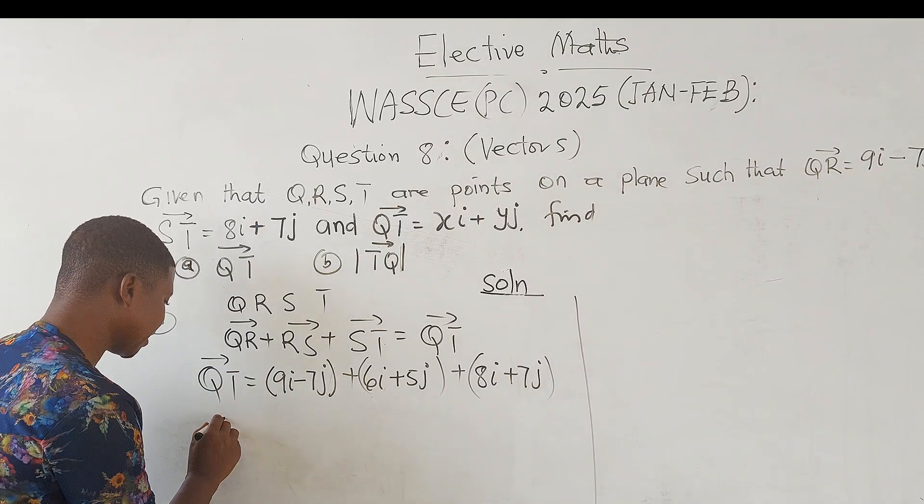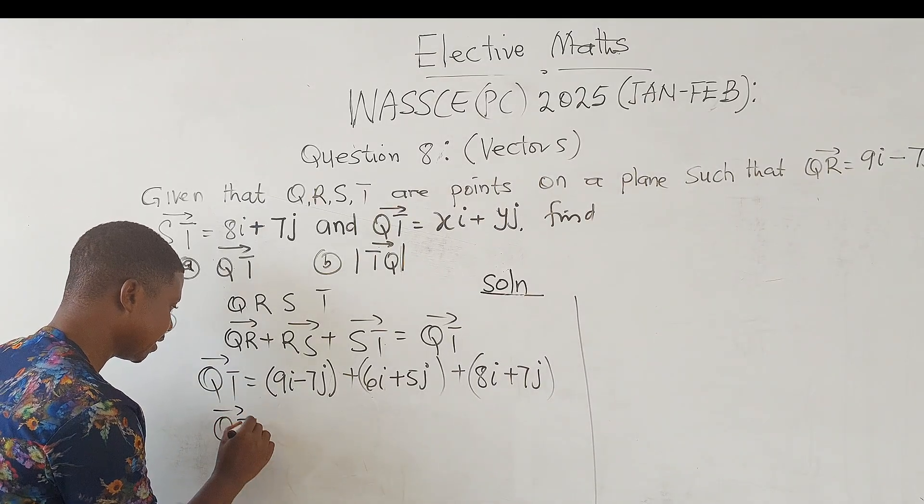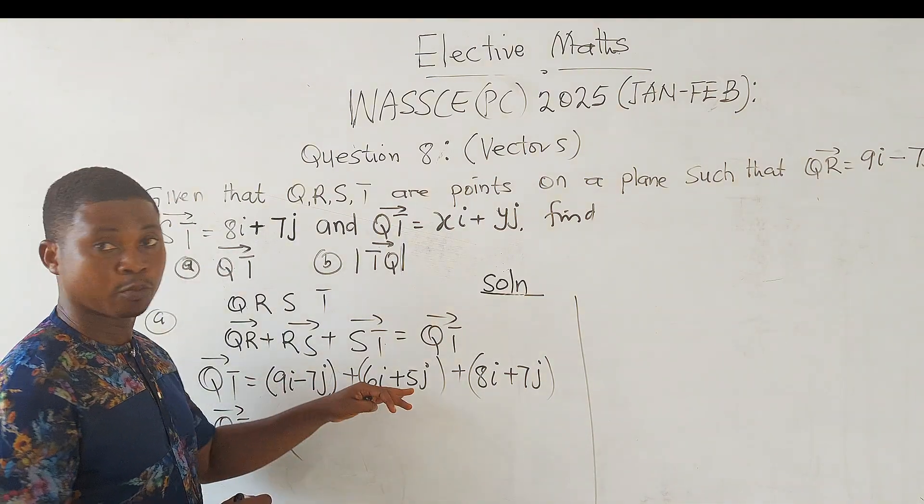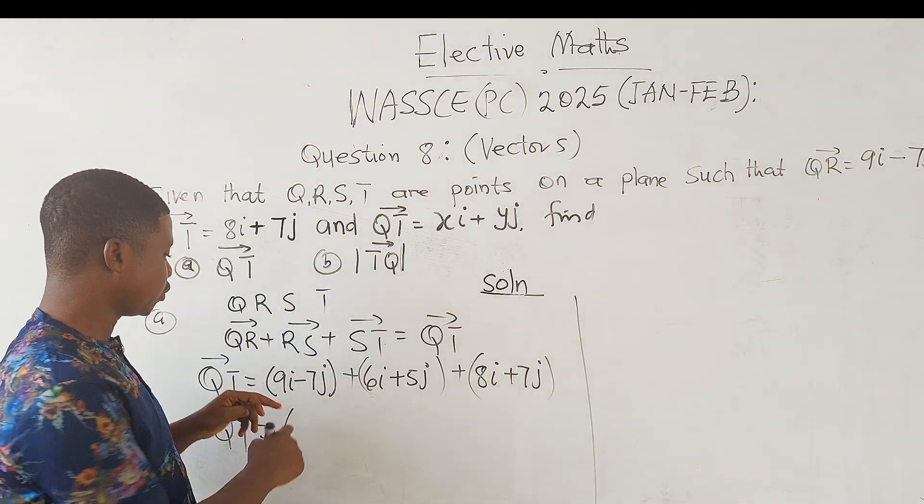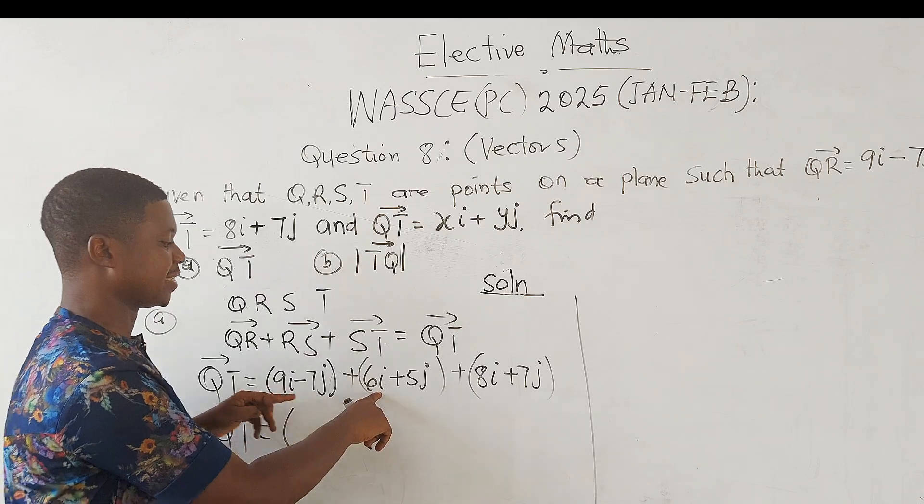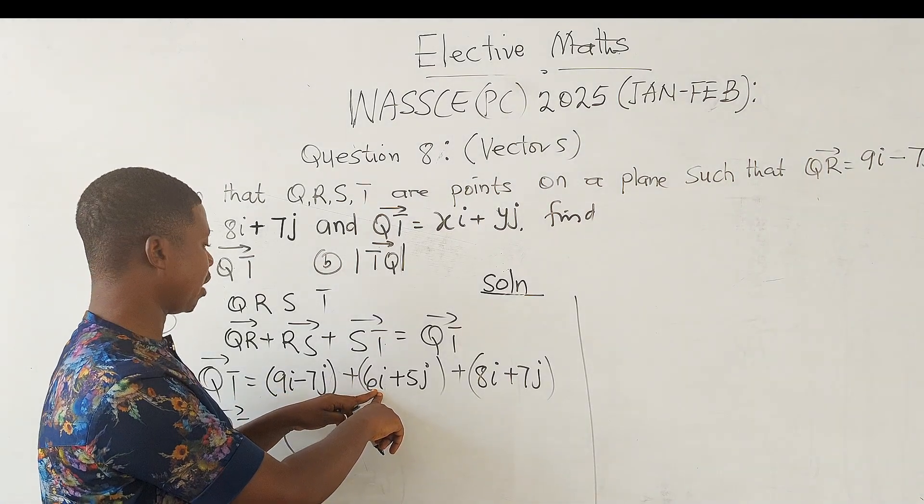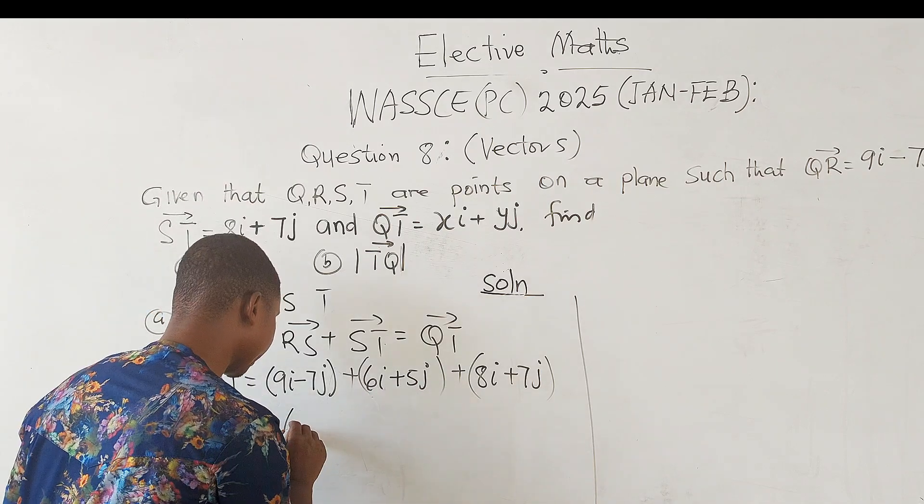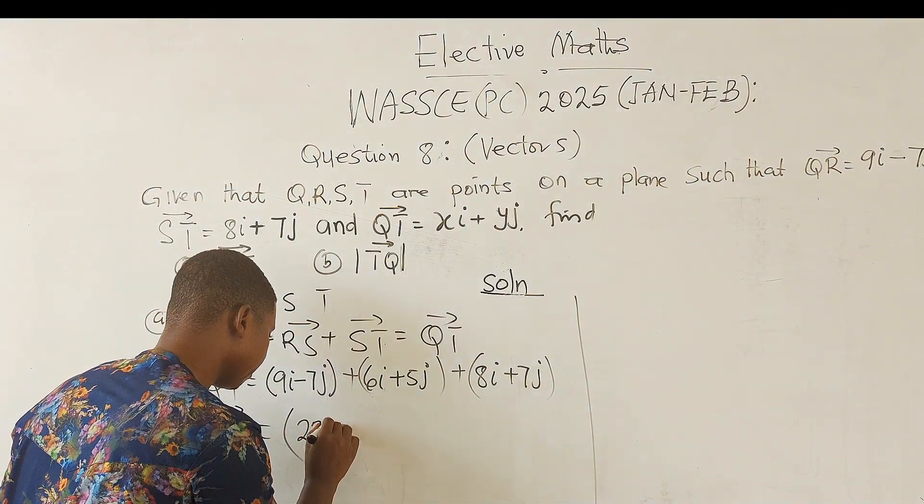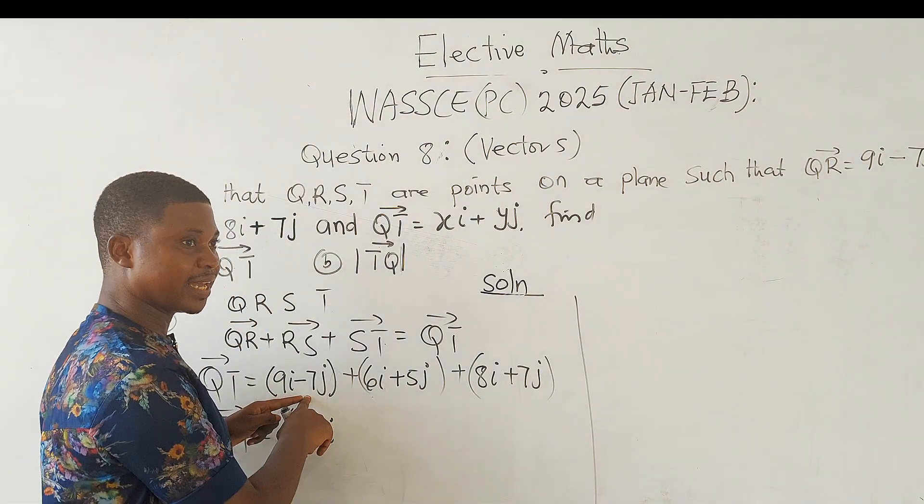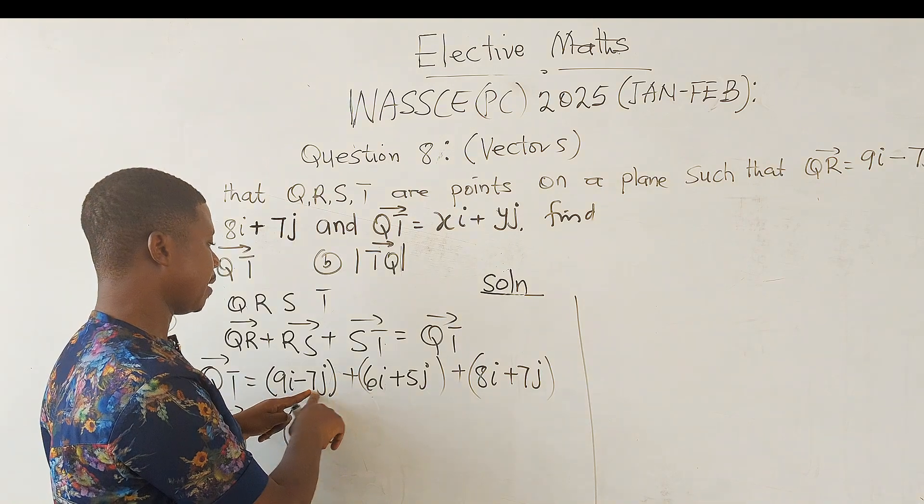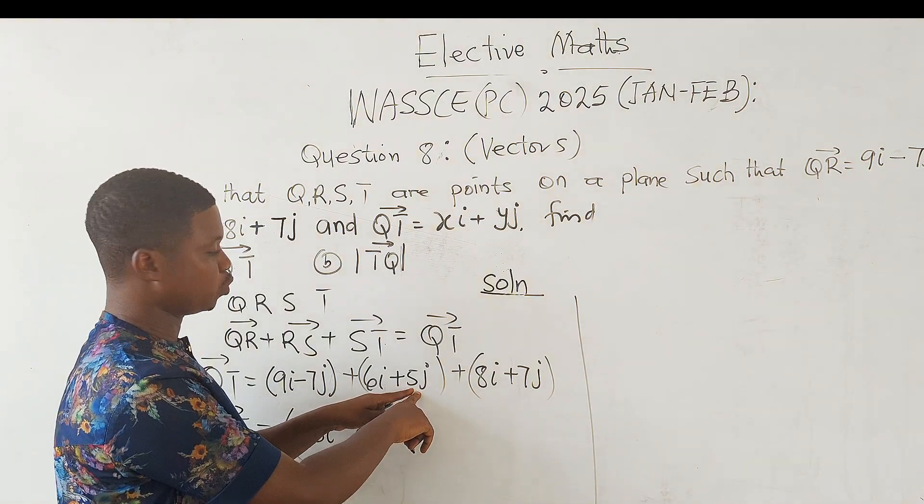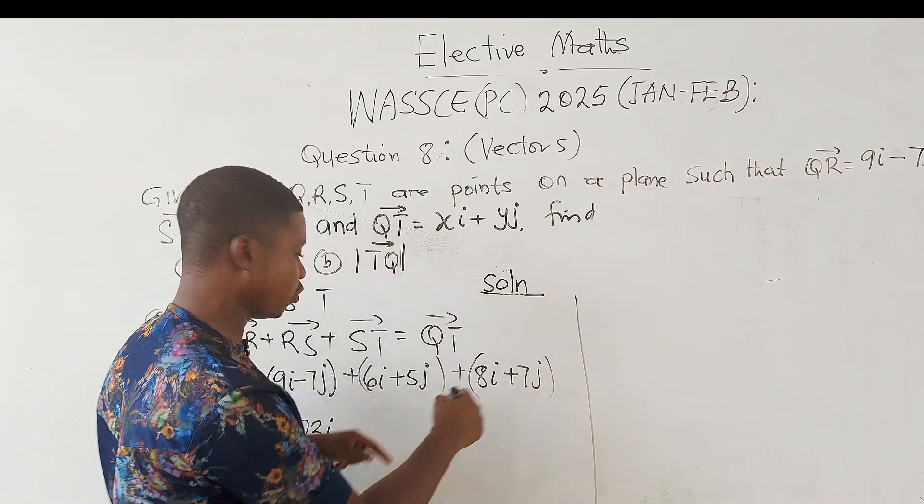So from this, QT is equal to—you add the x components. So 9i plus 6i, that would be 15, 15 plus 8 will give us 23i. Then if you look at the j, -7 plus 5j, -7 plus 5 will give us -2. And -2 plus 7 will get 5.